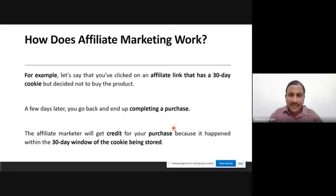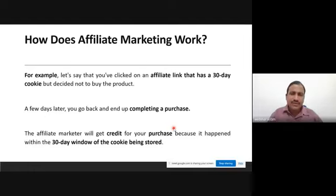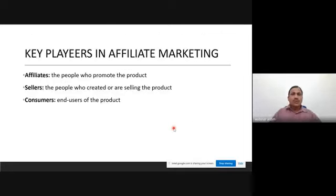Some companies give commission in proportions — for example, for insurance products, the first affiliate gets 40%, the second 20%, and so on. The details vary from company to company, which I'll explain in coming slides.